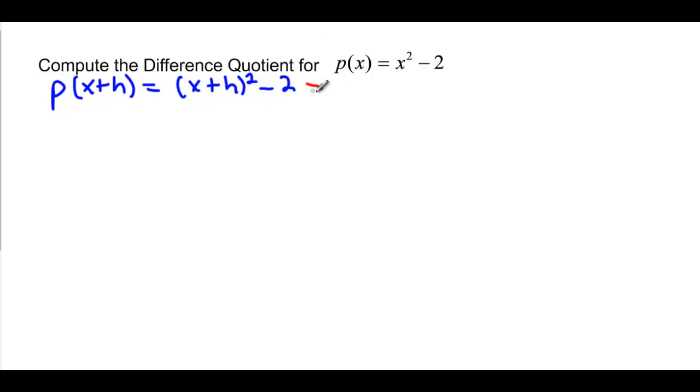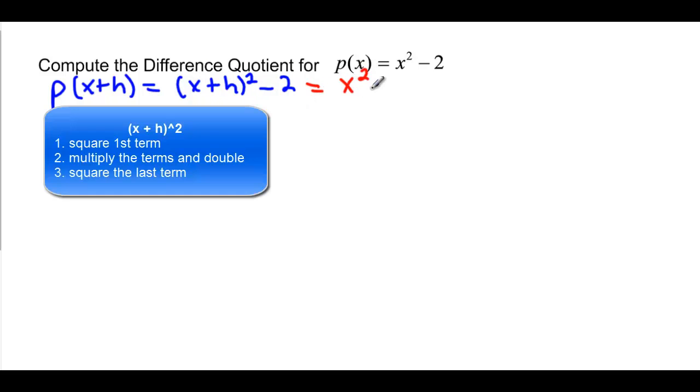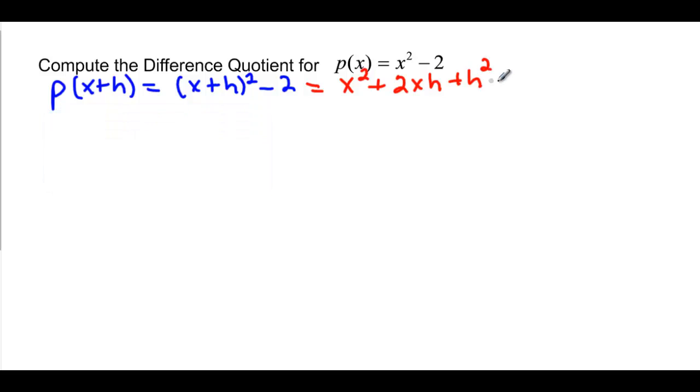And that's equivalent to, when you square this, you square the first one, then twice the product, so 2xh, and then plus the last term squared, which is h squared, minus 2.